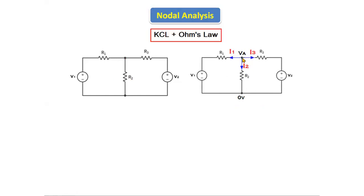The steps we have to follow: first, identify the unknown voltage. Assume that Va is the unknown node voltage and zero volts is the ground voltage. I am assuming that i1, i2, and i3 are the currents leaving from this node. You can choose the directions as you wish — i1 entering and i2, i3 leaving, or all entering — but based on the chosen direction we will write the equation.